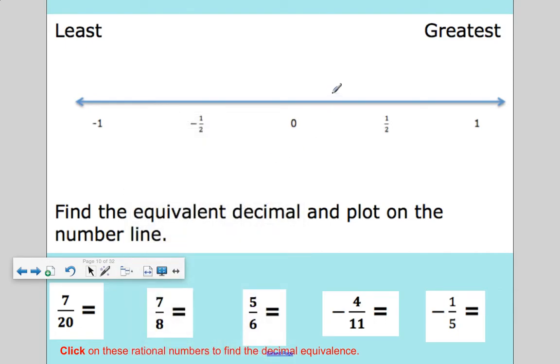So 35 hundredths would go somewhere right here. 7/20 is equivalent to 35 hundredths. Do you know what 1/2 is equivalent to? 50 hundredths or 5 tenths.